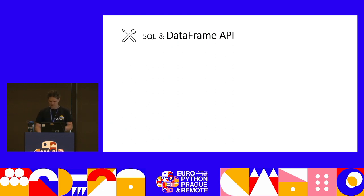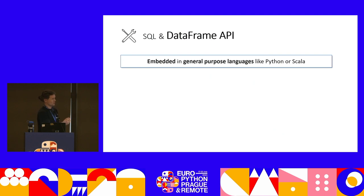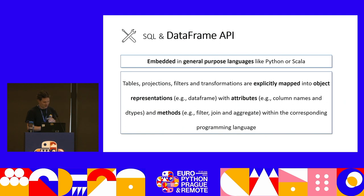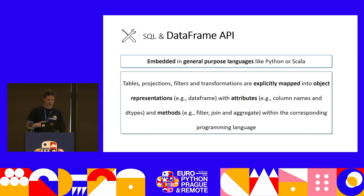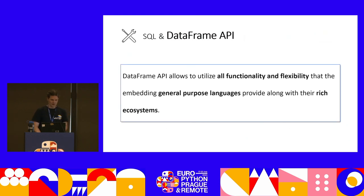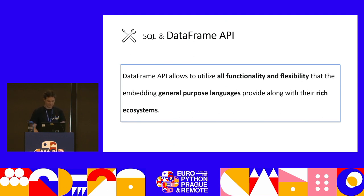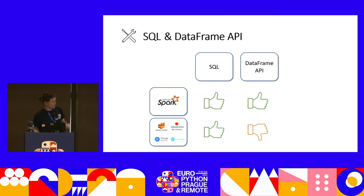Now let's focus on the DataFrame API. In general, DataFrame APIs are embedded in general-purpose languages like Python or Scala. Being embedded in a general-purpose language, concepts like table projection, filters, and transformations are explicitly mapped into object representations. We don't have a 'table' anymore — we call it a DataFrame with attributes like column names and dtypes, and methods like filter, join, and aggregate. The great benefit is that we gain all the functionality of that language and can participate in its rich ecosystem. That's a major difference. So: Spark offers both SQL and a DataFrame API, whereas cloud-native SQL engines mainly just have SQL.